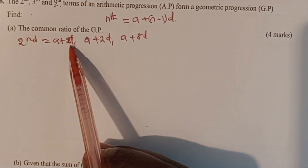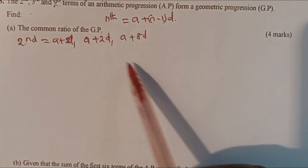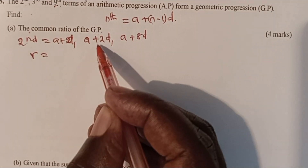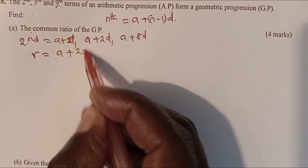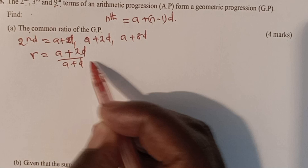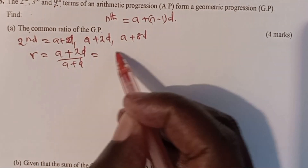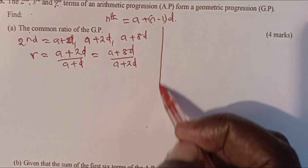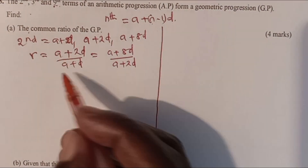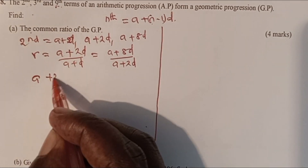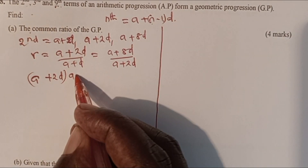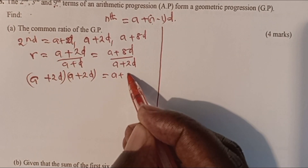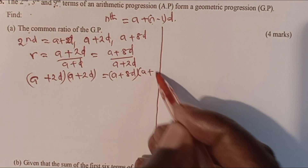We are told these three terms form a geometric progression. For a GP, the common ratio is given by taking the second term over the first: (A plus 2D) divided by (A plus D). This must equal the third over the second: (A plus 8D) divided by (A plus 2D). We cross-multiply to get (A plus 2D) times (A plus 2D) equals (A plus 8D) times (A plus D).